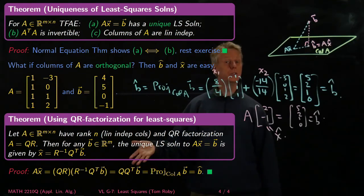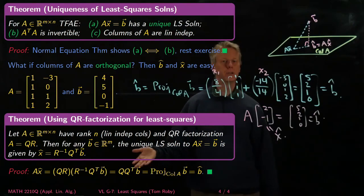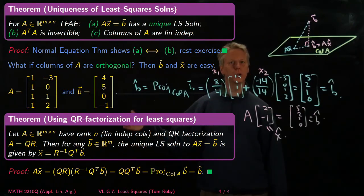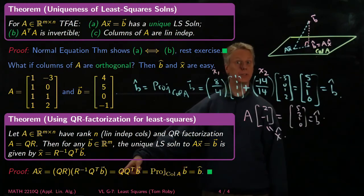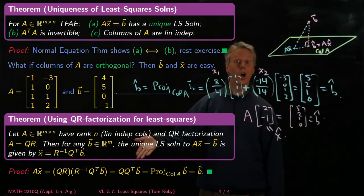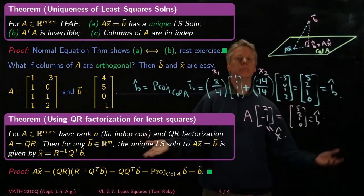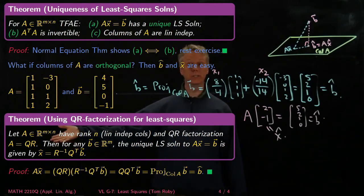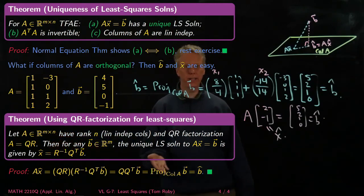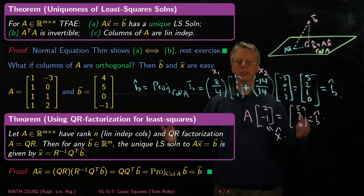But remember, the Q Q transpose just gave us the projection when the columns are orthonormal. This just gave us the actual projection of B onto B hat. So this is the projection onto the column space of A, which is the same as the column space of Q. It's a projection on the column space of Q of B, and that's just B hat. So therefore, we picked the right x because it has this property that when I apply A to it, I get B hat.